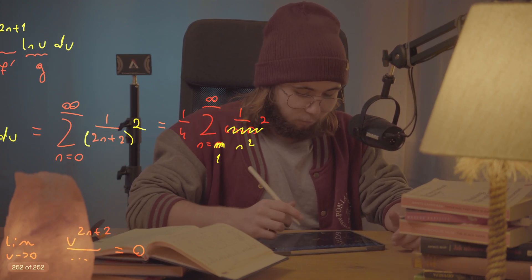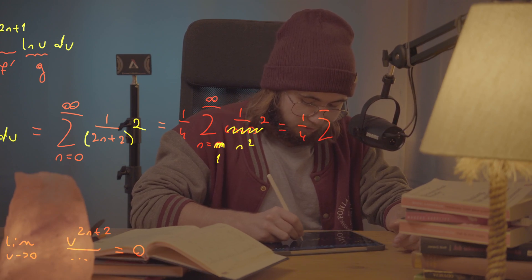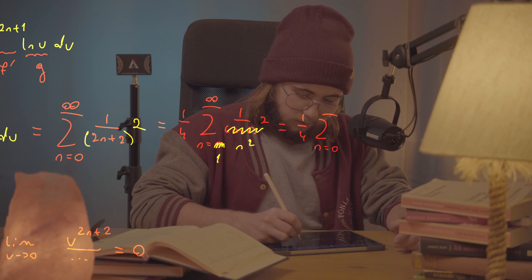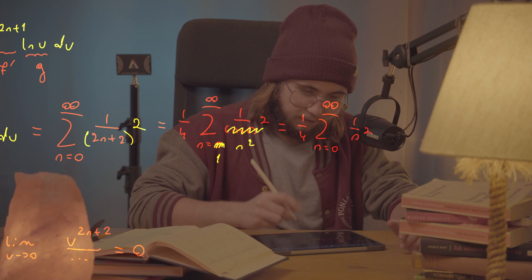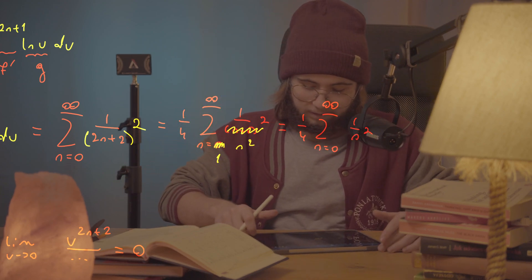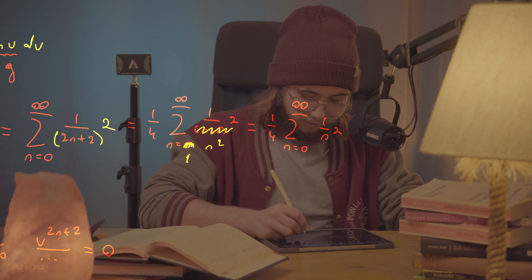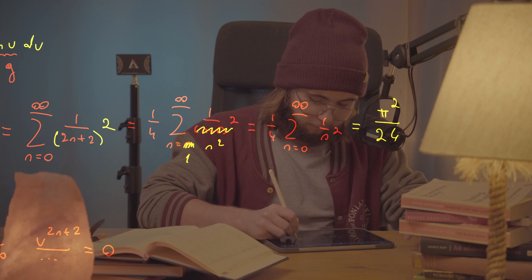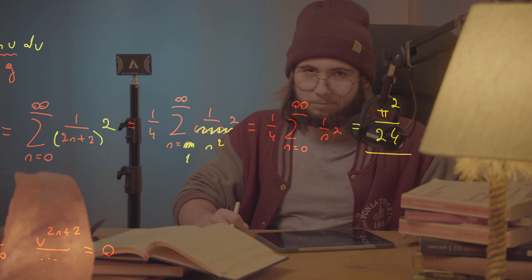This is just (1/4) times the Basel sum — the well-known Σ 1/n² from n = 1 to ∞, which I proved on this channel evaluates to π²/6. So the final answer is π²/(4 × 6) = π²/24. Hope you enjoyed it — see you in the next one!